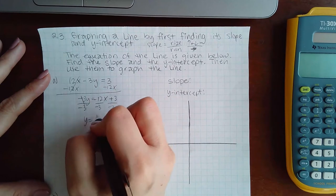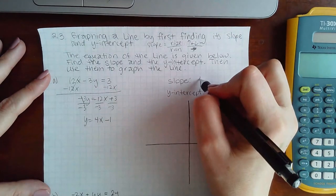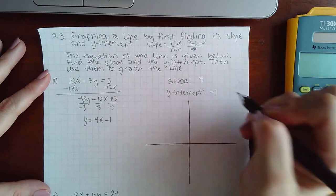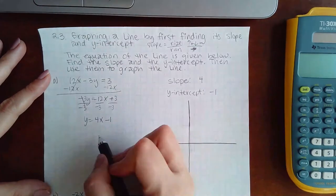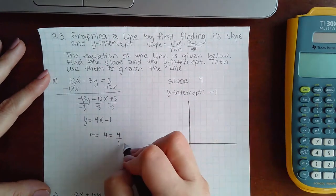This would become a +4x and this would become a -1. So my slope is 4 and my y-intercept is -1. Now I can write my slope as 4/1, so I know that I have to run forward one unit.